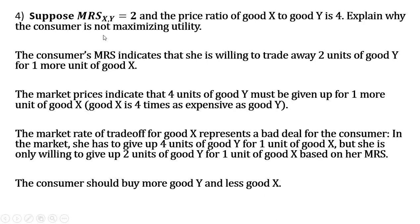Let's do another example. Suppose the marginal rate of substitution of good x for good y is 2 and the price ratio of good x to good y is 4. The consumer's MRS indicates she is willing to trade away 2 units of good y for one more unit of good x. The market prices indicate that 4 units of good y must be given up for one more unit of good x — good x is 4 times as expensive as good y. The market rate of trade-off for good x is a bad deal: she has to give up 4 units, but is only willing to give up 2. So the consumer should buy more good y and less good x.